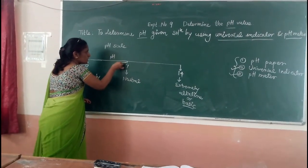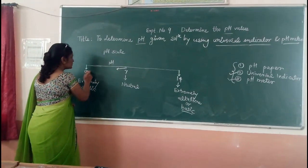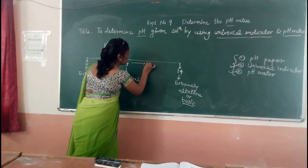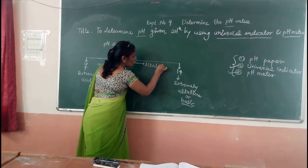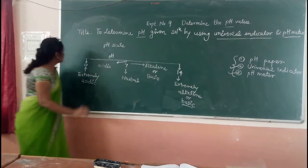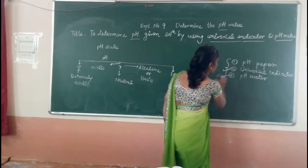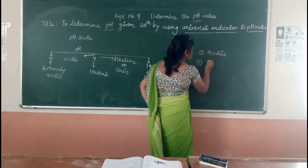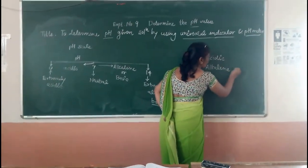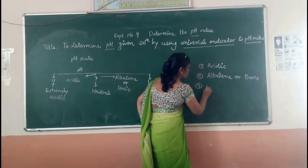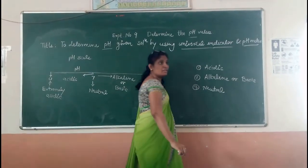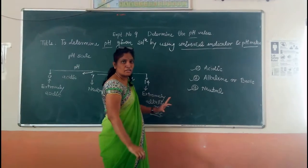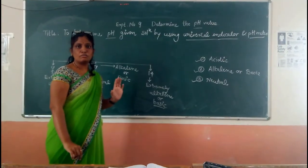When your pH ranges below 7 — between 0 and 7 — the nature of the solution is acidic. When it is between 7 and 14, it is alkaline or basic. So there are three natures of solution: acidic, alkaline or basic, and neutral. By identifying the pH value, you determine whether your solution is acidic, alkaline, or neutral.